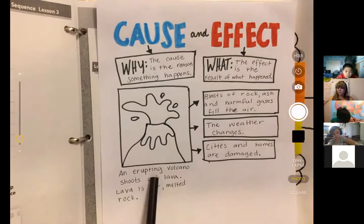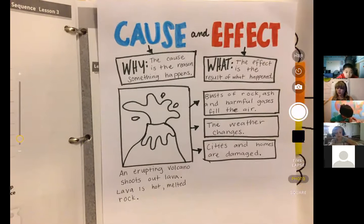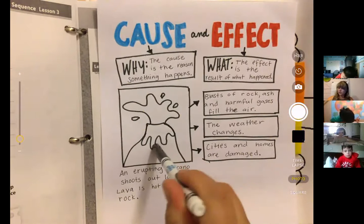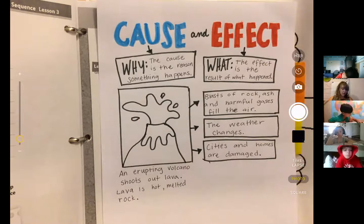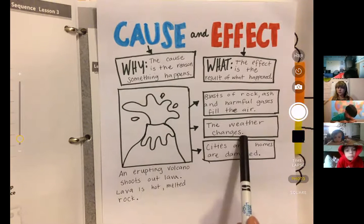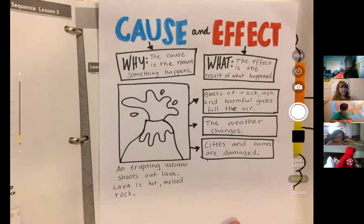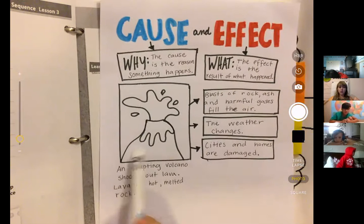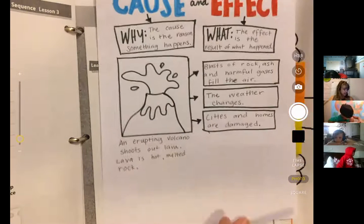So why? Why did all of these things happen? Because an erupting volcano shoots out lava, and lava is hot melted rock. So the cause, that's what happened, and the effect of that happening are those three things. Cause, effect. Next up, so I see somebody saying in the thing, so for example, the smoky air that we've been having recently, that is the effect. But the cause is all the wildfires, right? So very similar. Good connection, Zelda.